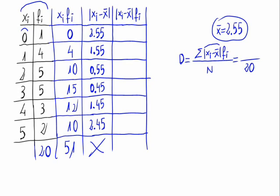What we do next is multiplying this column by f sub i, so 1 times 2.55 is 2.55. 4 times 1.55, 6.2.